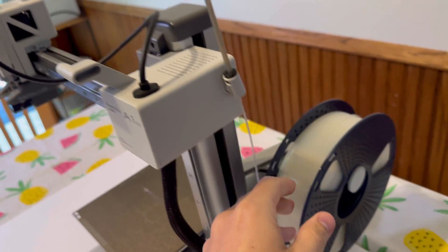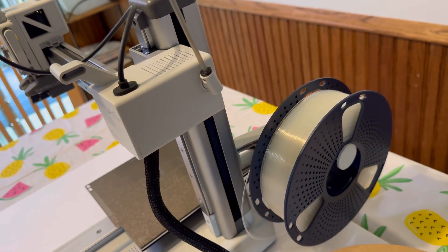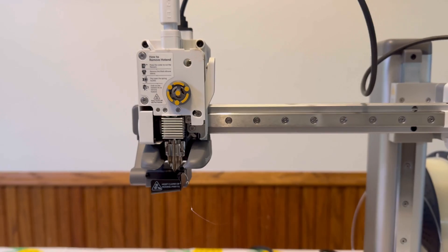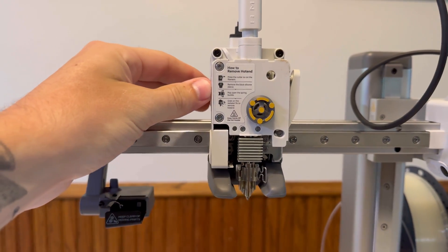So that process is done. As you can see here we should be able to just pull back this filament nicely. There you have it. Make sure you give the nozzle enough time to cool down after doing that. All right so let's get back to removing the nozzle here.